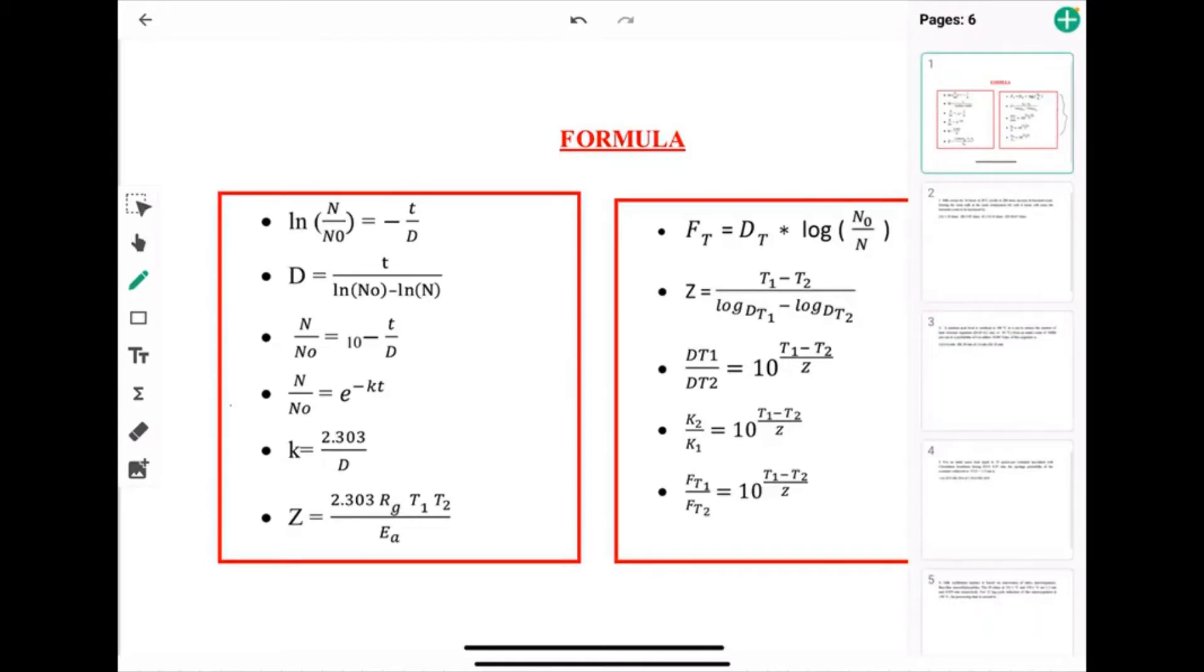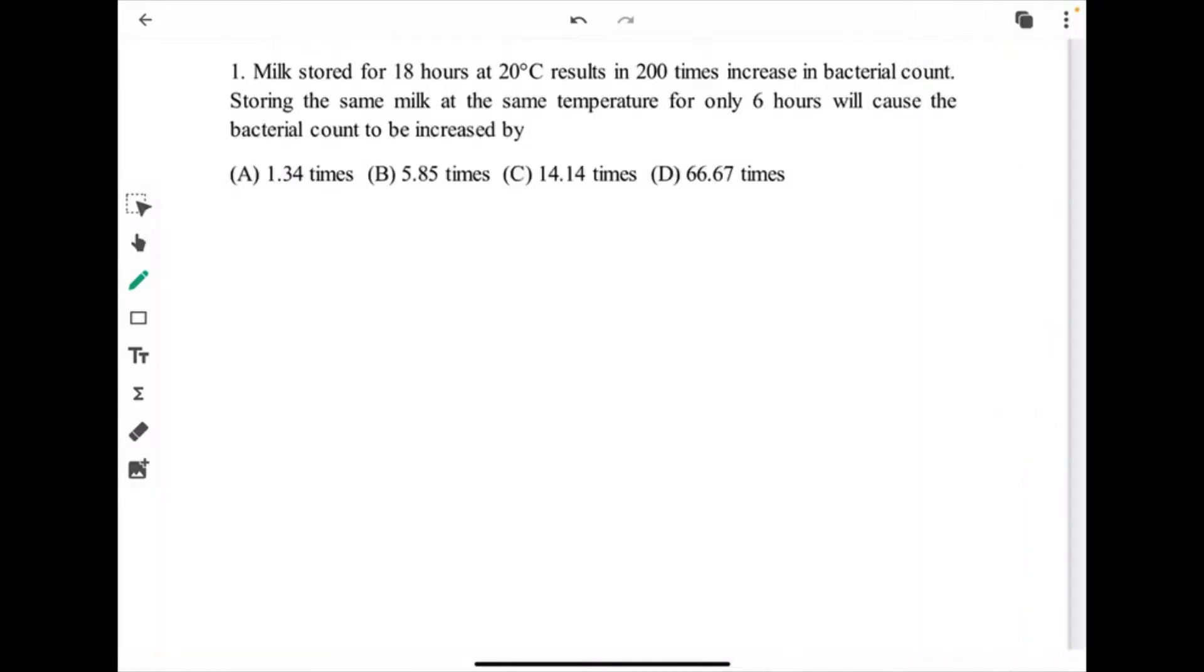Let's begin by solving first numerical. Milk stored for 18 hours at 20°C results in 200 times increase in bacterial count. Storing the same milk at the same temperature for only 6 hours will cause the bacteria count to be increased by. We have two conditions here: 18 hours and 6 hours, and the temperature is fixed for both at 20 degree Celsius.